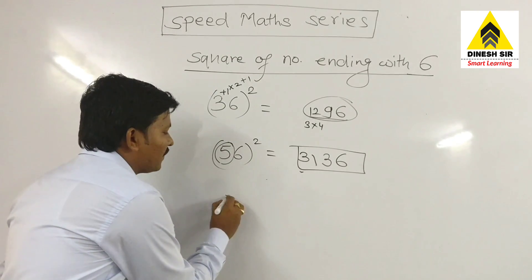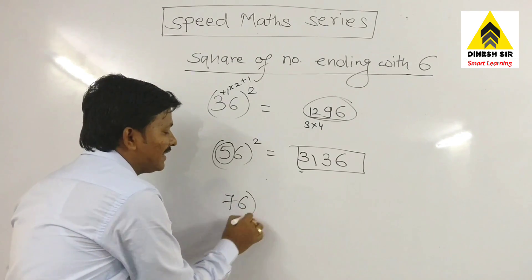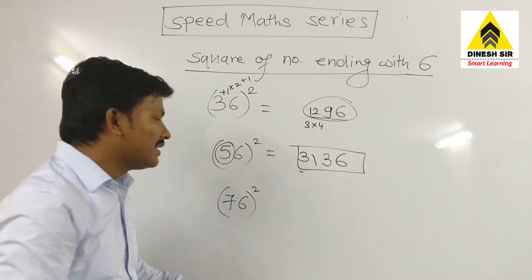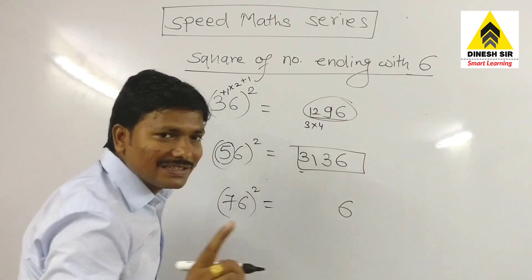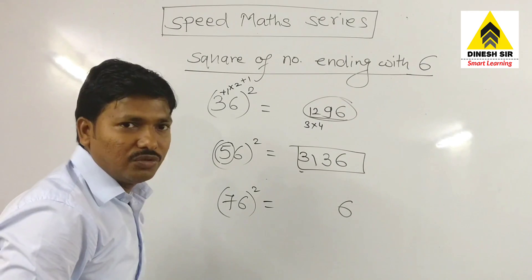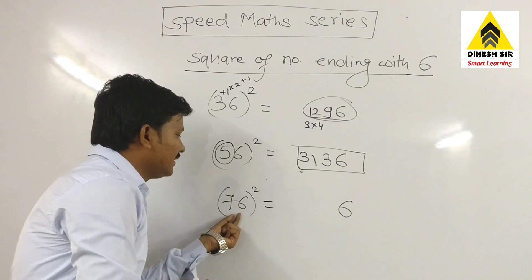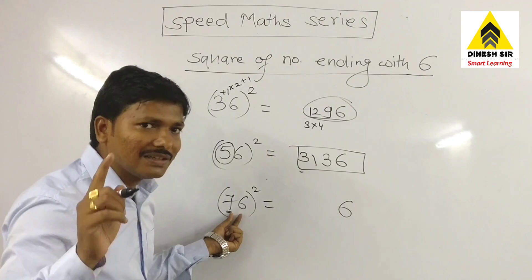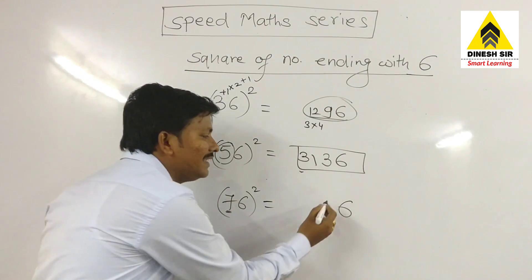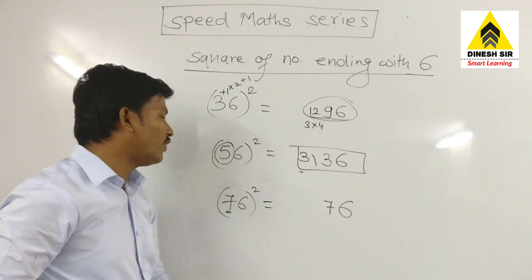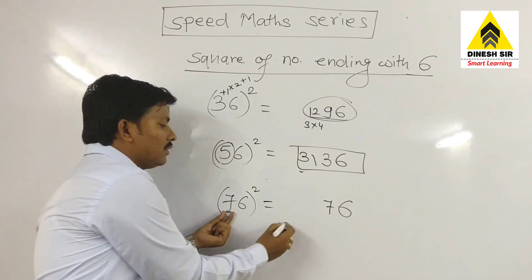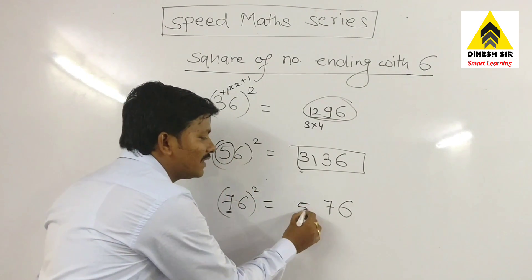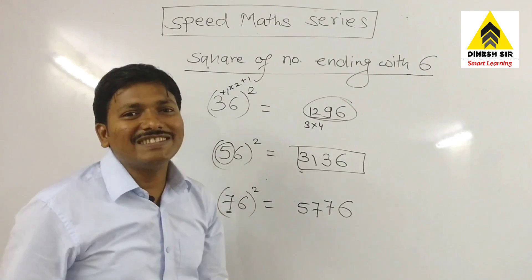Let's see one more. If I have 76 square: write 6 as it is at the unit place. Now take the first number 7. Add 1 to get 8. Double 8 to get 16, then add 1 to get 17. Write 7, carry 1. Now 7 multiplied by 8 is 56, plus 1 carry gives 57. So the square of 76 is 5776.